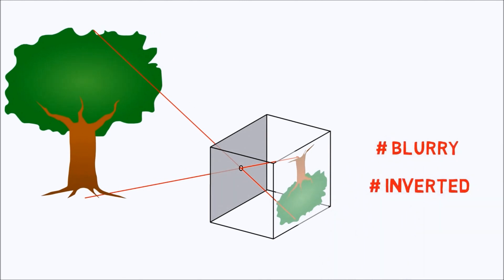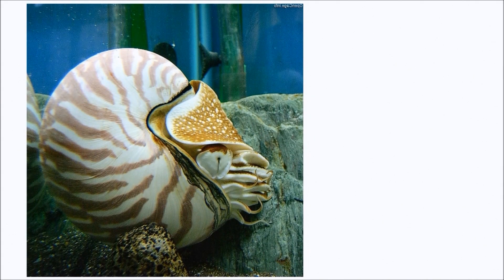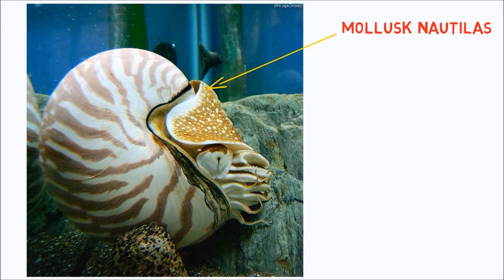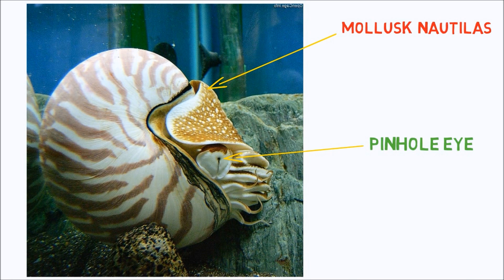We can even find this stage of evolution in today's animals. This is a photo of mollusk nautilus, an octopus that has a pinhole camera-like eye. Now coming to the next part.